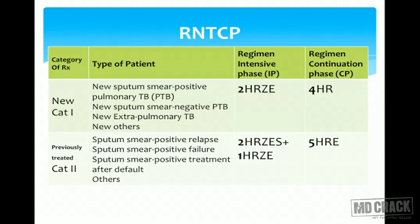Under the Revised National Tuberculosis Control Program (RNTCP), the government has simplified to two categories. Category 1 covers all new cases — sputum positive or negative, seriously ill or not, HIV positive or negative, and extrapulmonary tuberculosis. Category 2 covers previously treated cases, including treatment failures, treatment interruptions, resistant cases, and relapses. In Category 2, more drugs are given with an initial intensive phase of three months followed by five or more months of continuation.